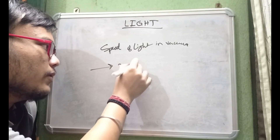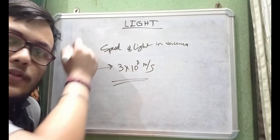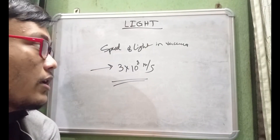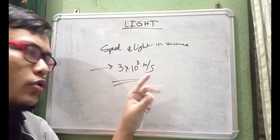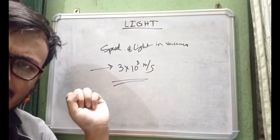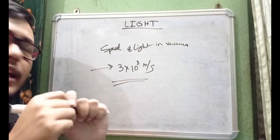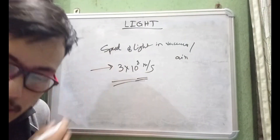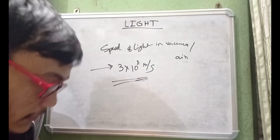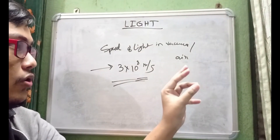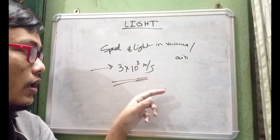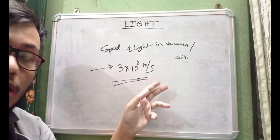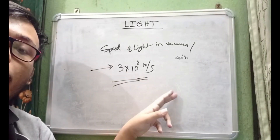The speed of light in vacuum is 3 × 10⁸ meters per second. The speed of light in air is also comparable to that — slightly less but we take it as 3 × 10⁸. However, this constant speed of light in vacuum and air will not be the same in water or any other substance.